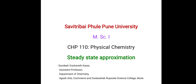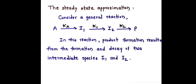Hi, welcome. Today we are going to study steady state approximation. For this we have to consider a general reaction in which our reactant A initially gives us an intermediate called I1. That intermediate gives us another intermediate called I2, which on further reaction gives us product P.